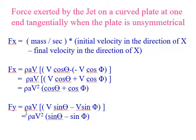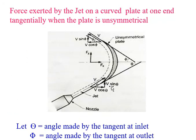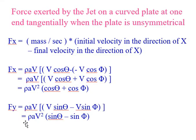In the y-direction, from the figure, the initial velocity is V sin theta and the final velocity is V sin phi. Therefore, Fy = mass per second into (initial minus final velocity) = rho A V (sin theta minus sin phi). This is the derivation of the force exerted by the jet on a curved plate at one end tangentially when the plate is unsymmetrical. Thank you all.